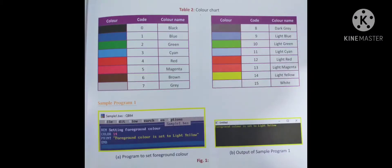Go through the color chart table showing different color names, color codes, and colors. Sample program 1 demonstrates setting the foreground color. Using COLOR 14, the print statement outputs 'Foreground color is set to light yellow.' The output displays the text in light yellow because color code 14 corresponds to light yellow.